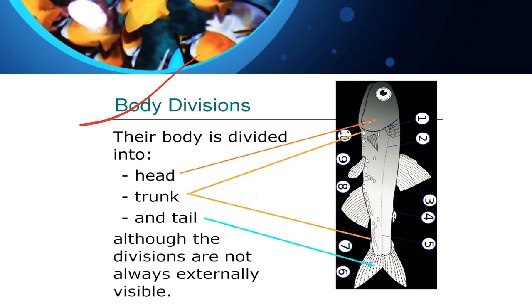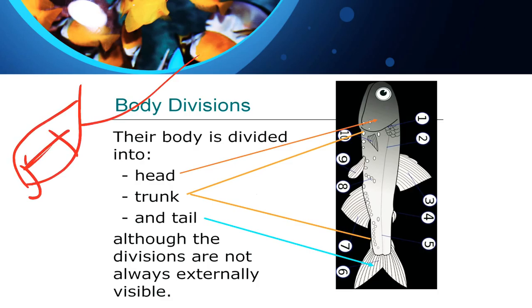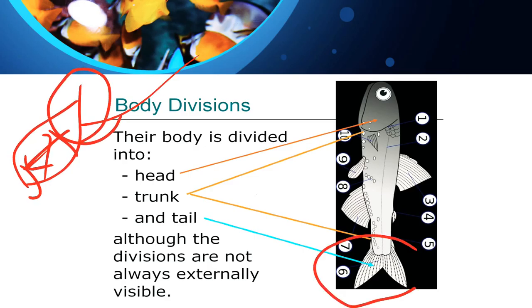How do we divide the body parts? A fish's body is divided into head, trunk, and tail — three parts. So all these divisions are externally present.